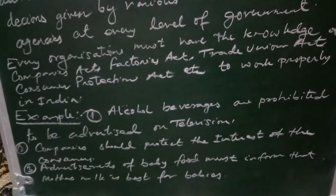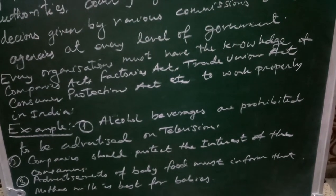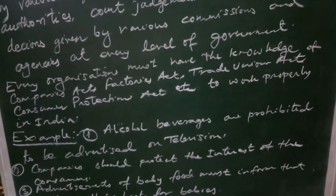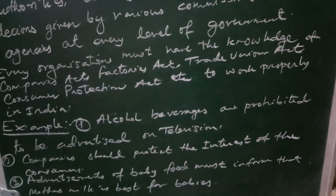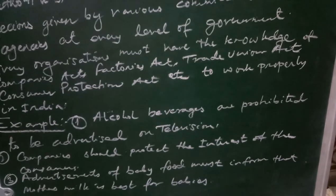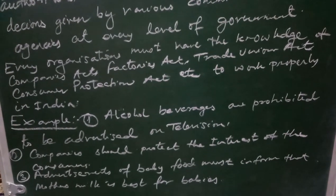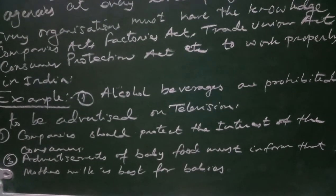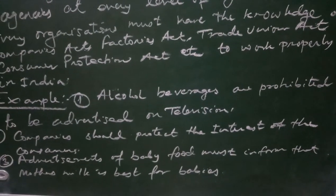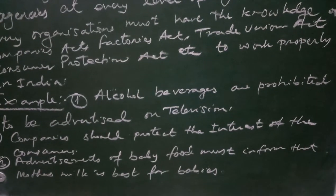For example, alcohol products are prohibited from being advertised on television — this is the legal environment. Companies must know about the different types of laws. Companies should protect the interests of consumers because of the Consumer Protection Act, and must take necessary steps to ensure consumer interests are protected. Additionally, advertisements of baby products must inform that mother's milk is best for babies.